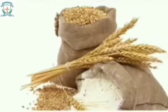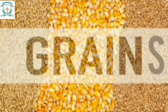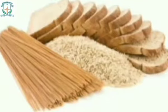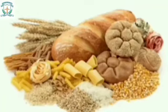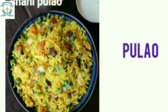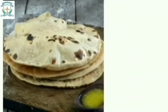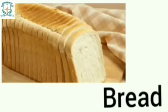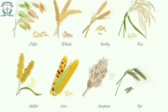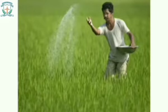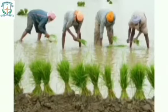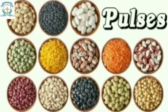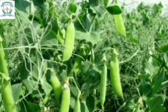Cereals: We get cereals from plants. Cereals are grains — plants which produce grains that can be eaten are called cereals. Cereals form our main food. We make pulao, idli, roti, bread, etc. from cereals. Some of the cereals are rice, wheat, maize, and barley. Farmers grow cereals for us in the fields.